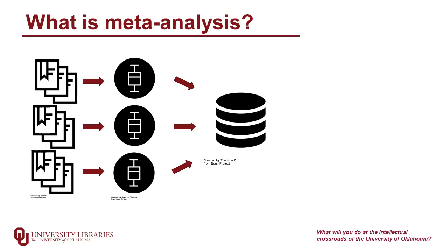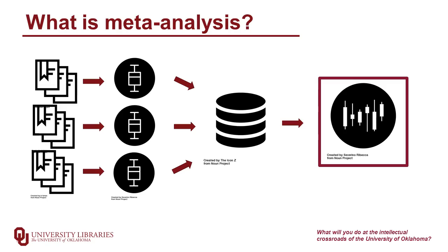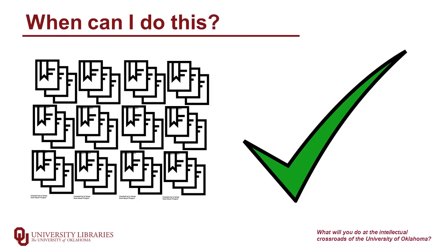Once you have that dataset, you can start statistically analyzing it to look for trends across the broader literature instead of looking at just one study's results. This kind of study is going to work best if there are a lot of studies already providing effect size. If there's only one or two studies on the topic you're interested in, you're not going to be able to draw very broad conclusions.